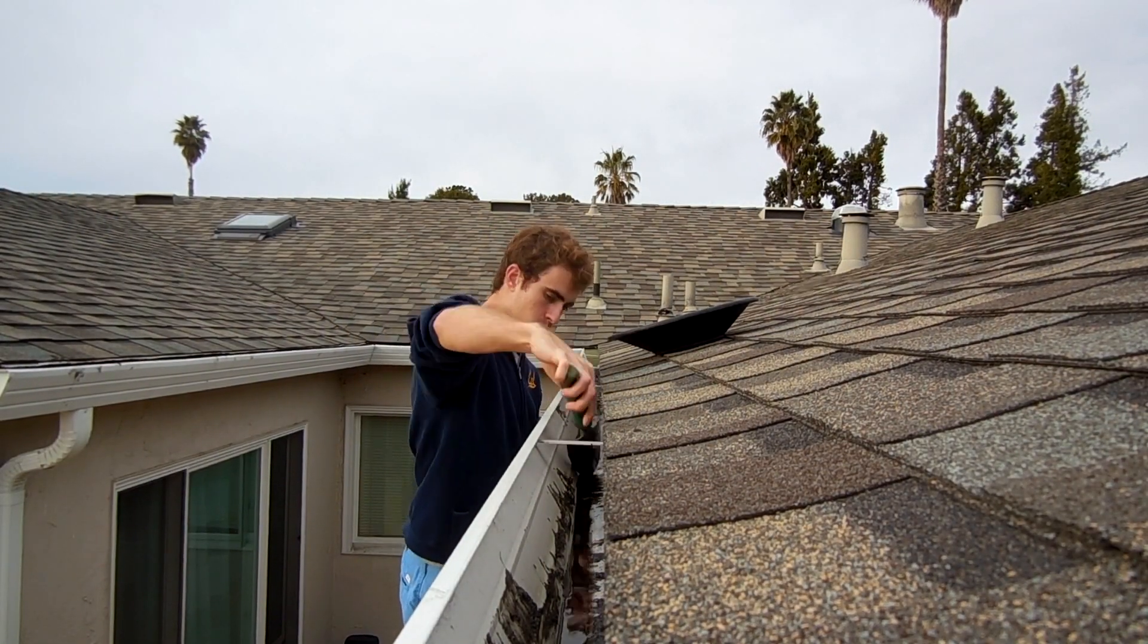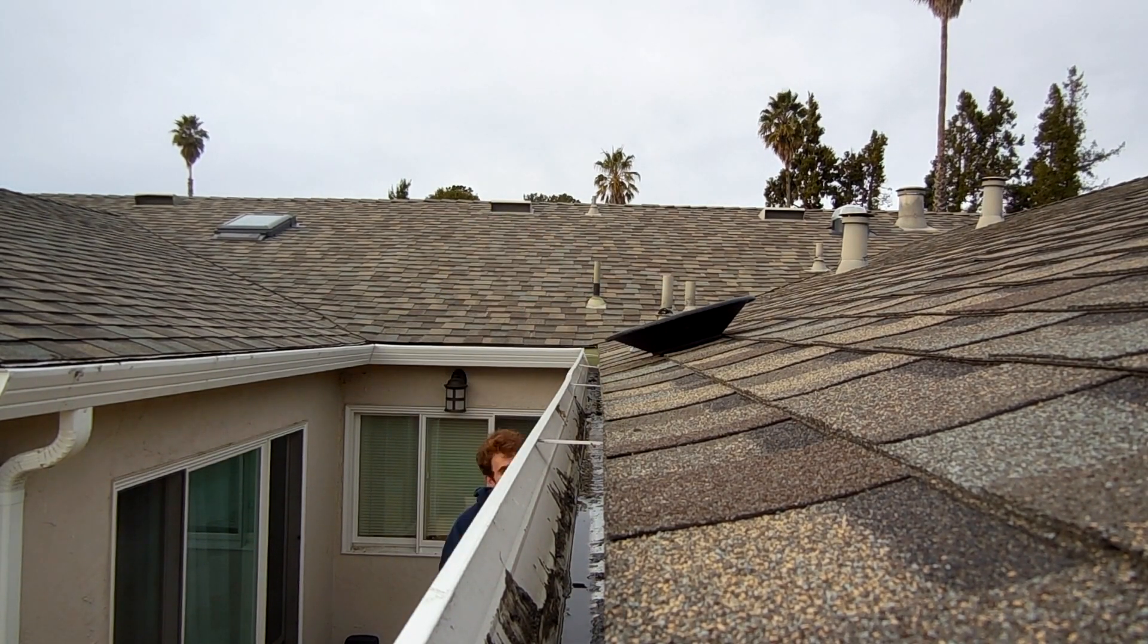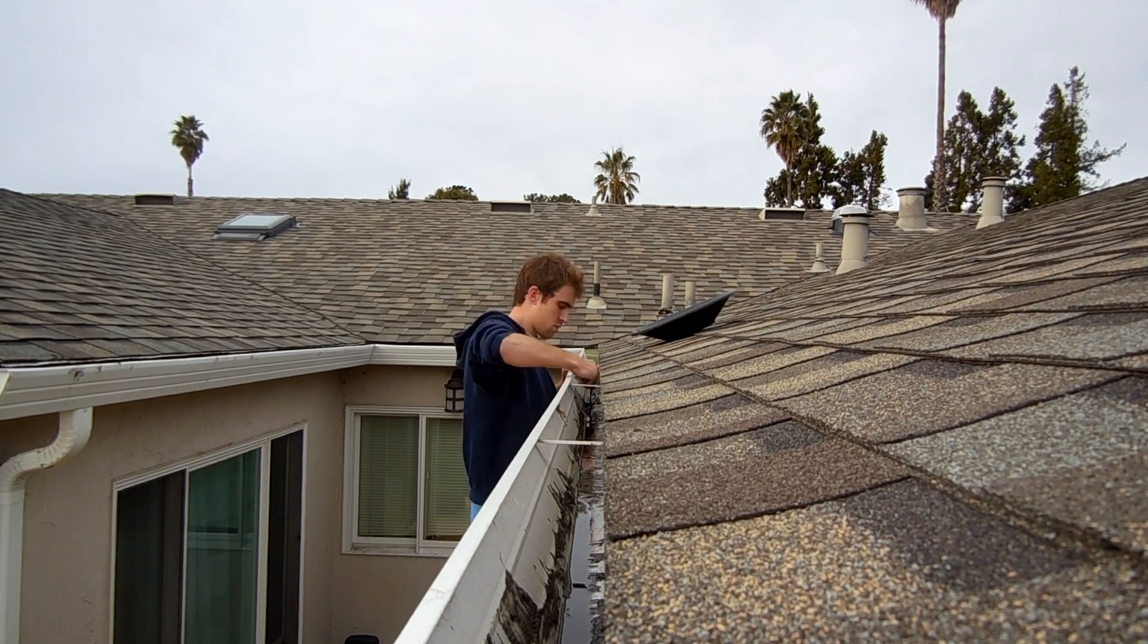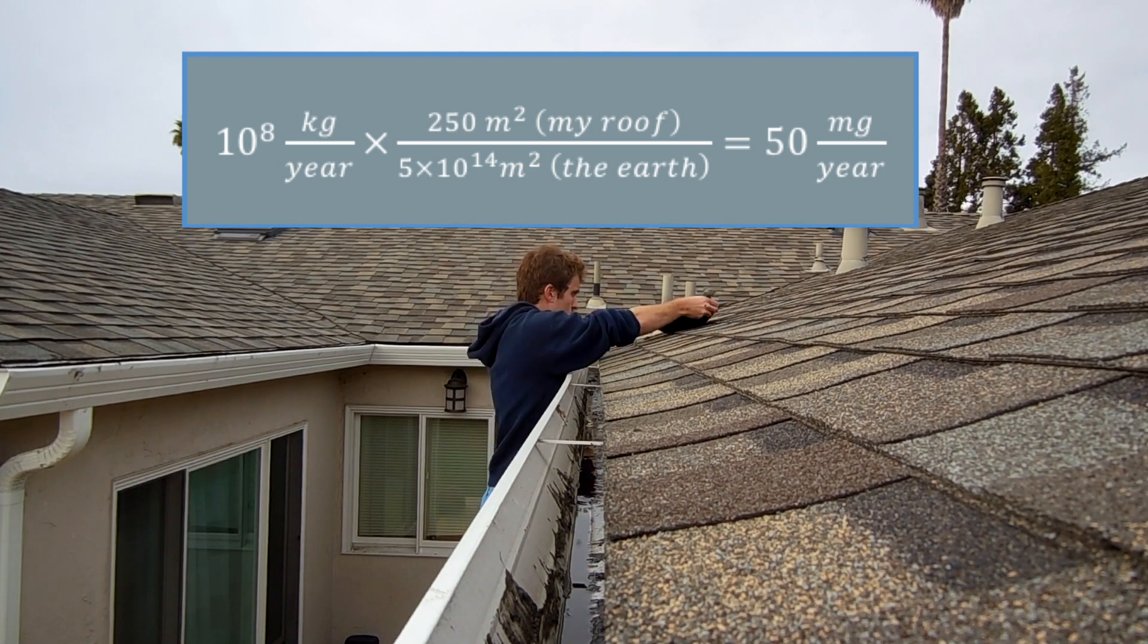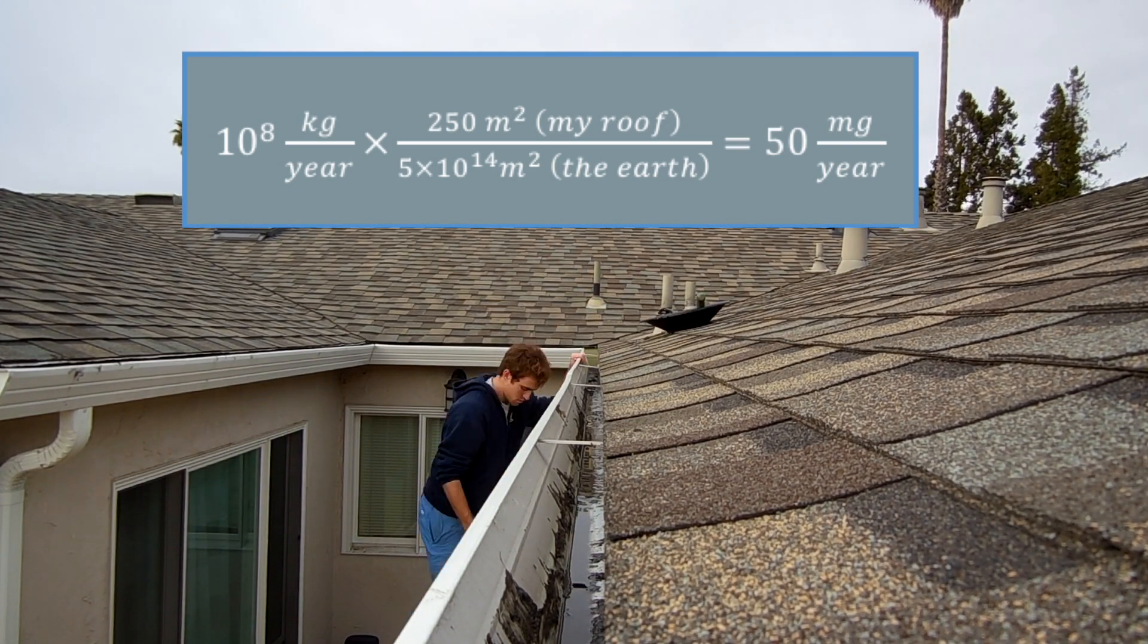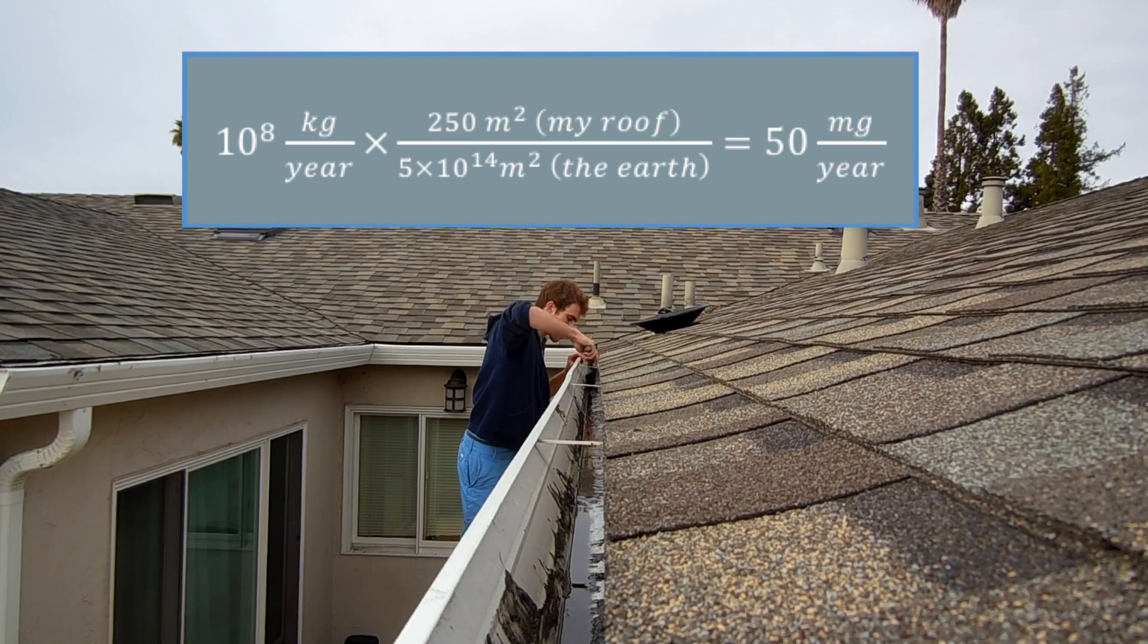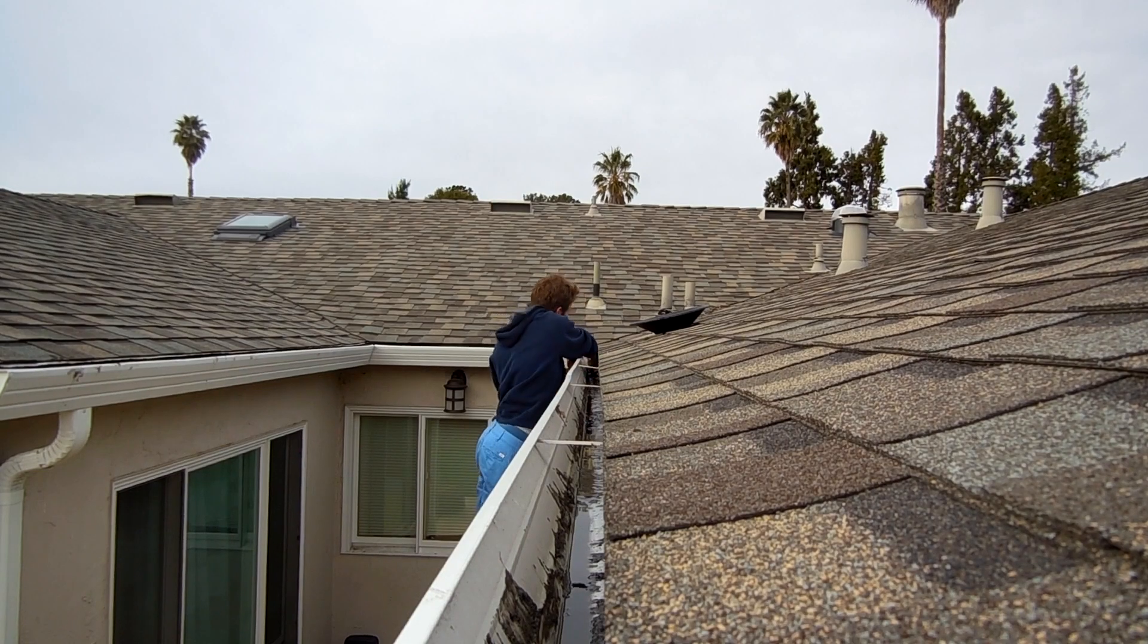This is a project that I've had in mind for a while and here's the basic idea. Every year something like 100,000 tons of material comes down to earth from outer space and it falls all over the earth which is really big and my roof isn't that big but just some rough estimates tell me that I should expect about 50 milligrams of meteorites to fall on my roof every year. My roof is about 10 years old so there could be up to half a gram of meteorite on my roof.